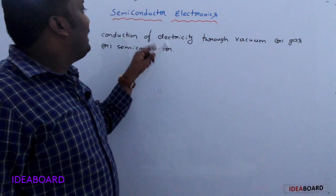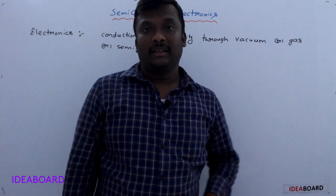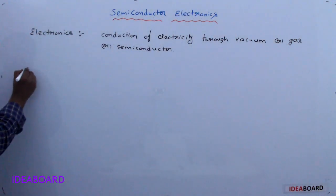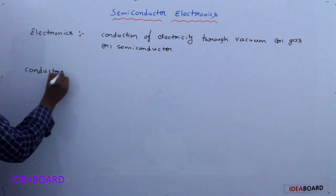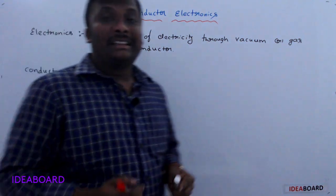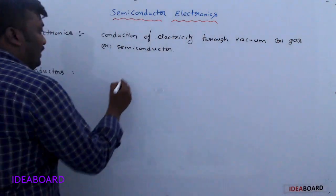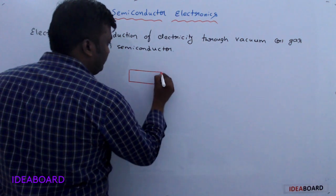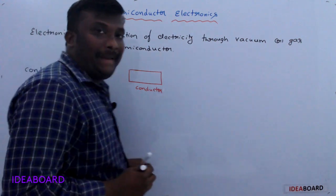Our lesson is Semiconductor Electronics, so we are discussing only about semiconductors. Before that, we know about conductors. Conductors contain free electrons and they conduct electricity through them. The best example of a conductor is metals.